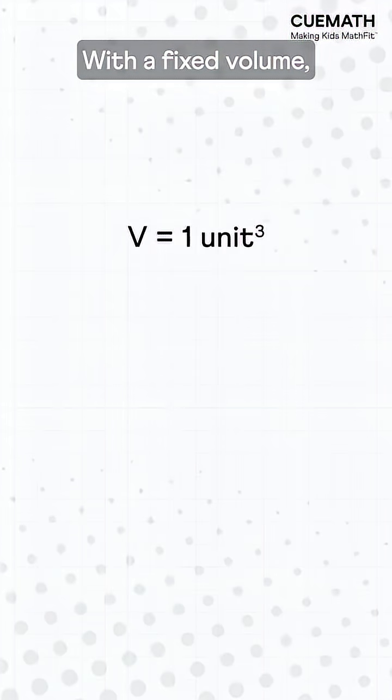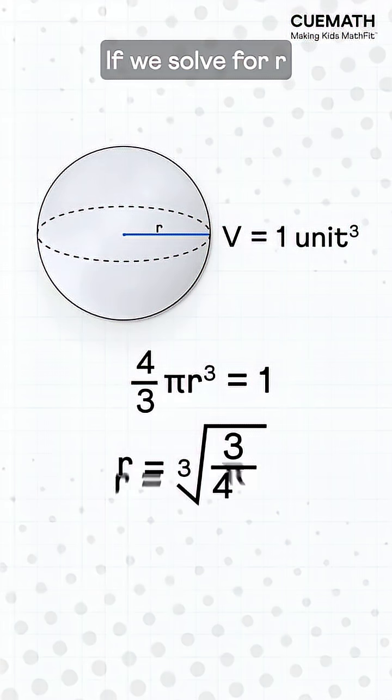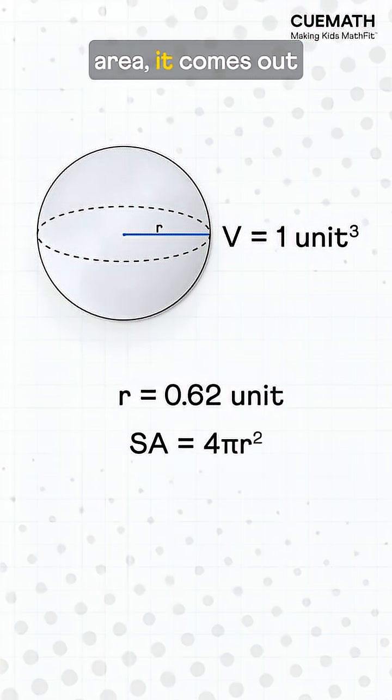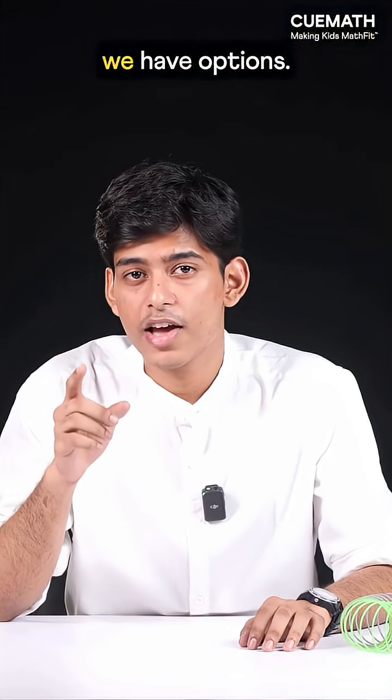With a fixed volume, say one cubic unit, we get a unique sphere of volume 4/3 πr³. If we solve for r and then the surface area, it comes out to be about 4.83. But with a torus, we have options.